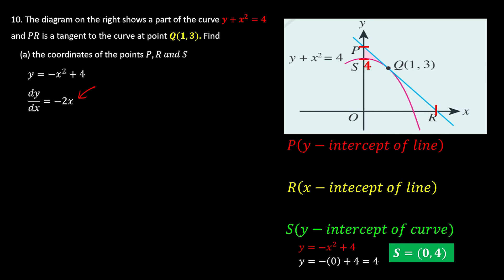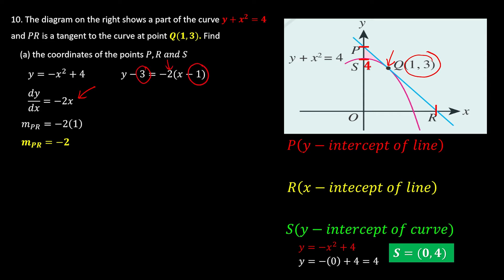We want the gradient at x = 1, so we substitute 1 into the derivative and get -2. Now we know the gradient of the line is -2. We use the formula y - y₁ = m(x - x₁), picking point Q(1, 3), to construct the equation of the line. After expanding the bracket and rearranging, we get y = -2x + 5.